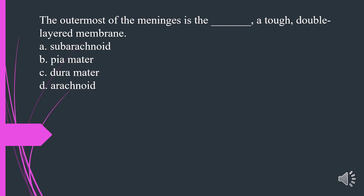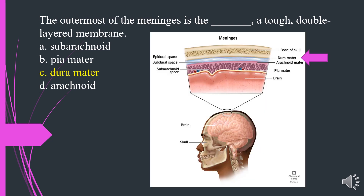The outermost of the meninges is what — a tough, double-layered membrane? A. Subarachnoid. B. Pia mater. C. Dura mater. D. Arachnoid. The answer is C. Dura mater.